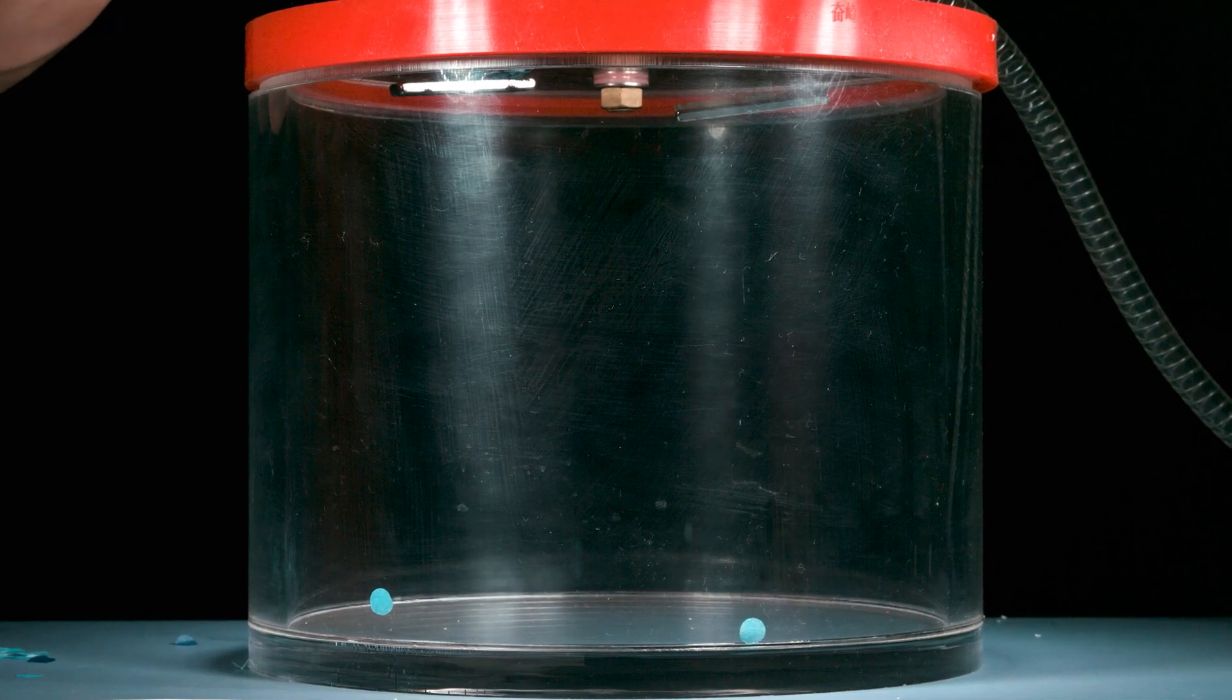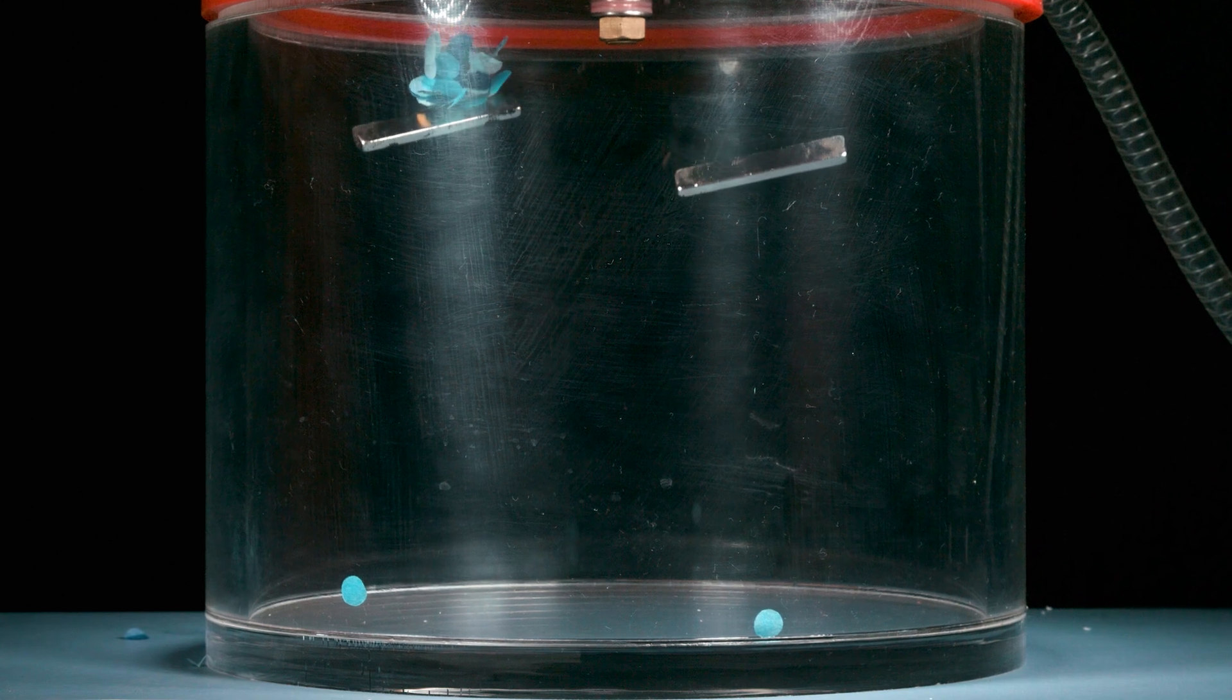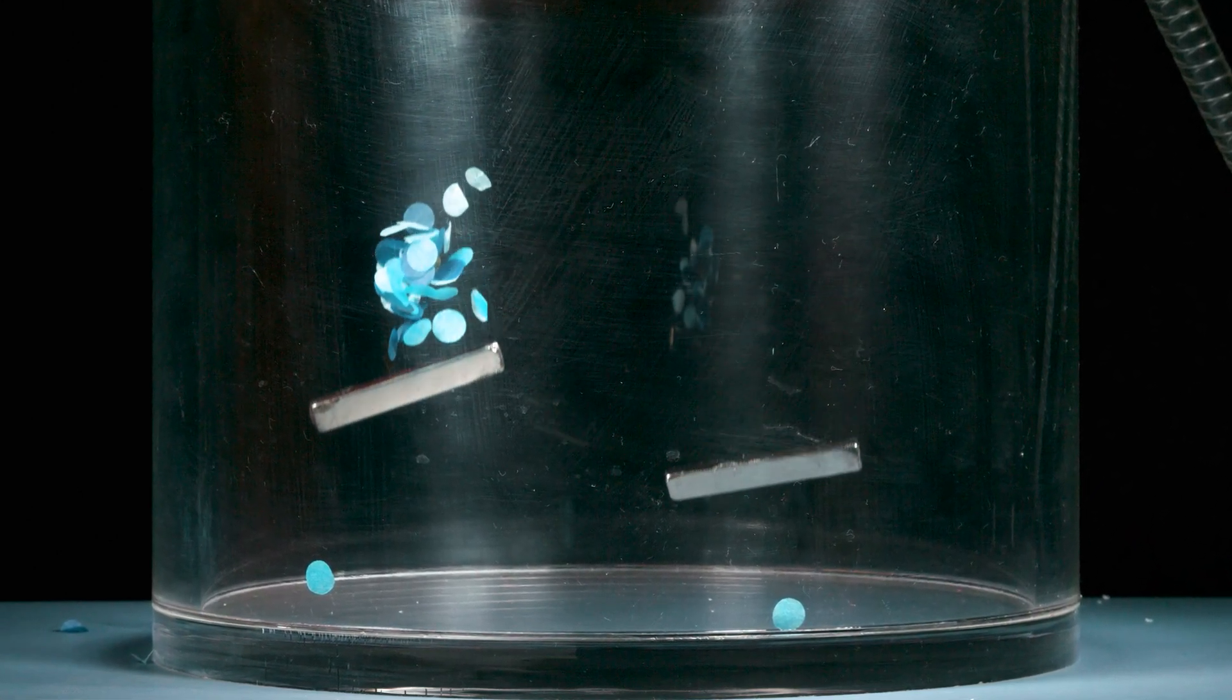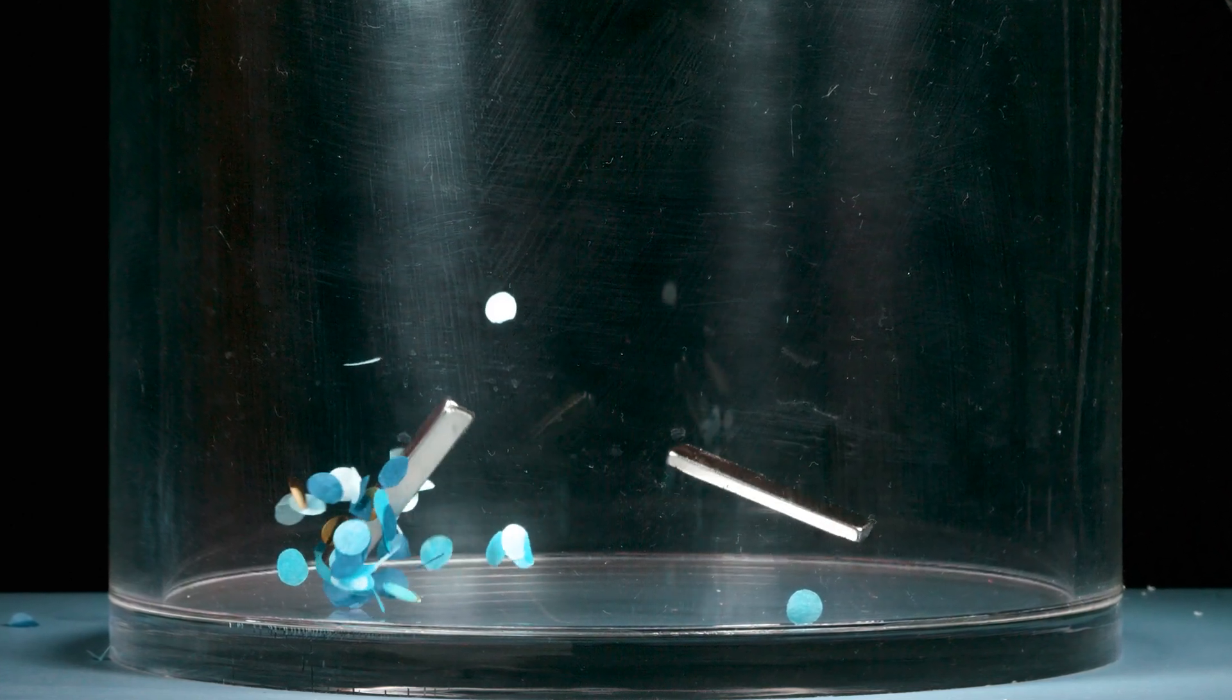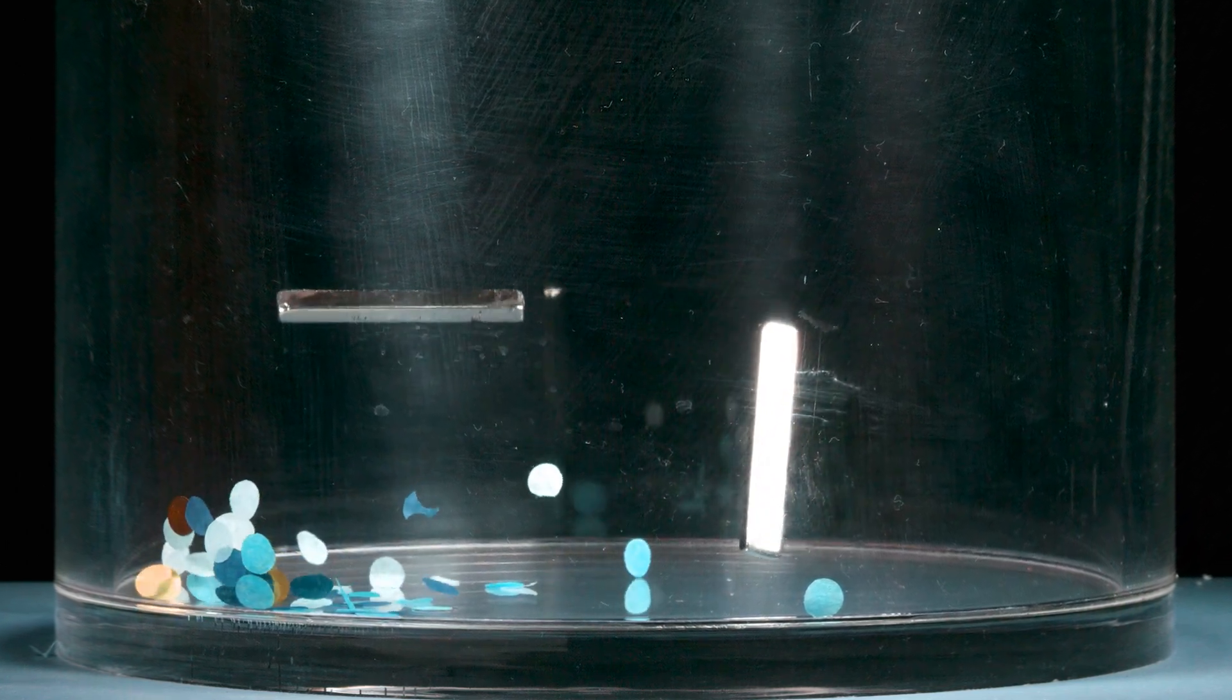Here I'm dropping some paper confetti along with some magnets. And in this case there is air in the chamber. I'm doing it as a control so you can clearly see how the magnet is accelerating down faster and slamming into the ground before the bulk of the confetti gets there. Now remember what this looks like. We're going to do it with the air pumped out next.